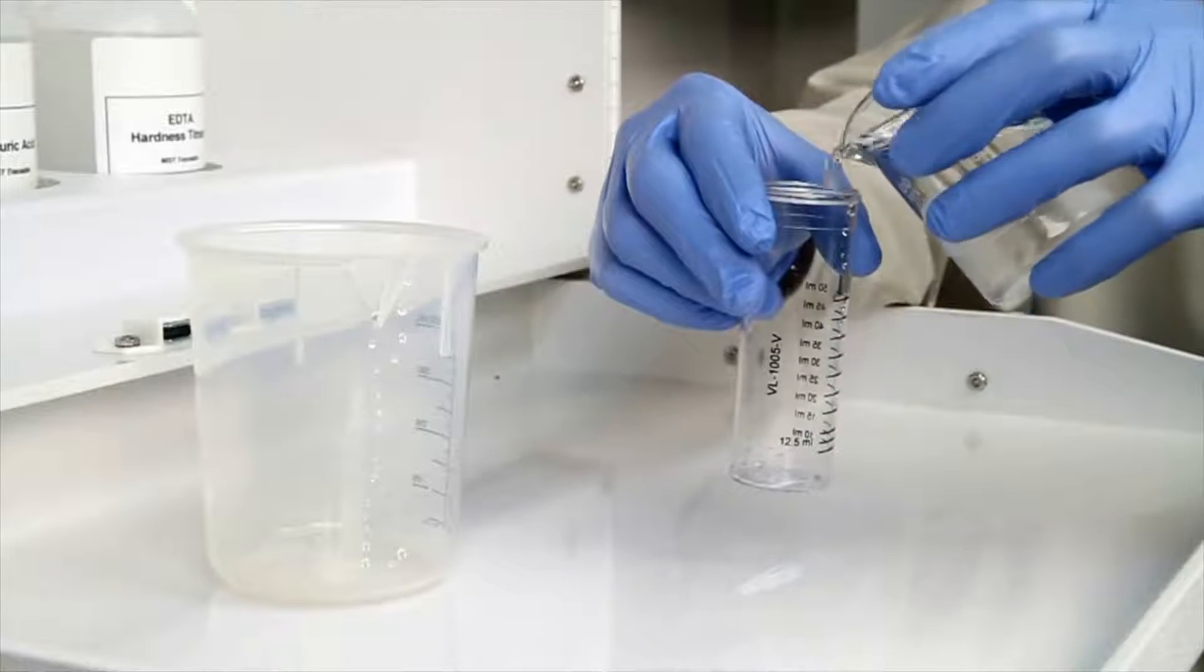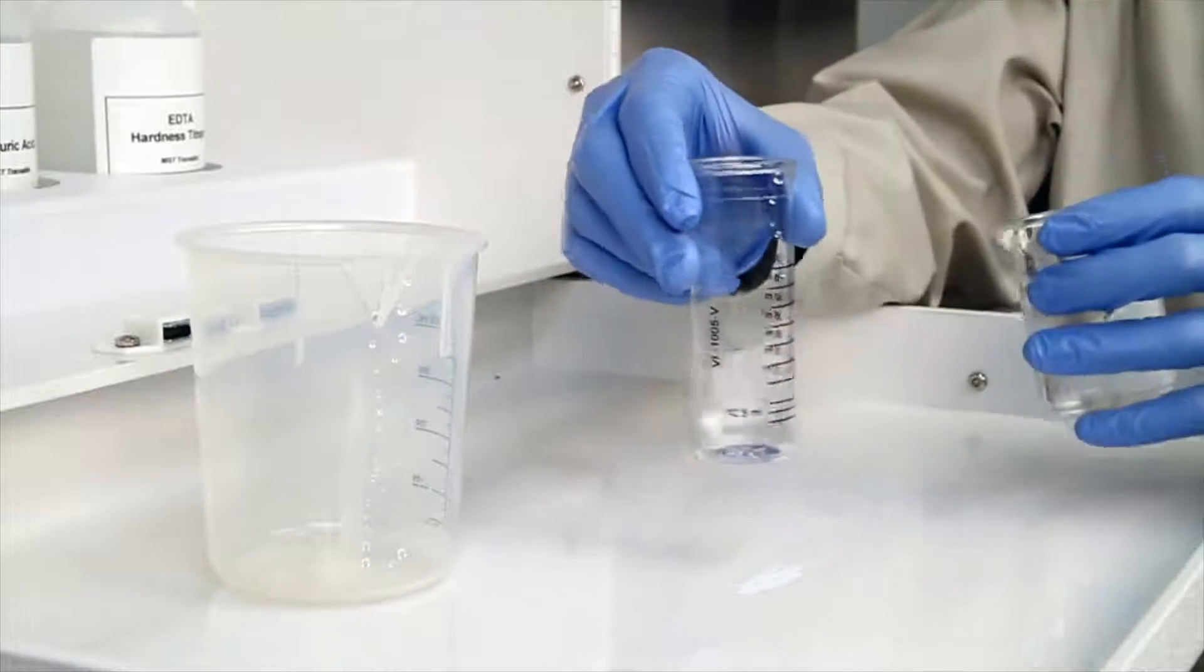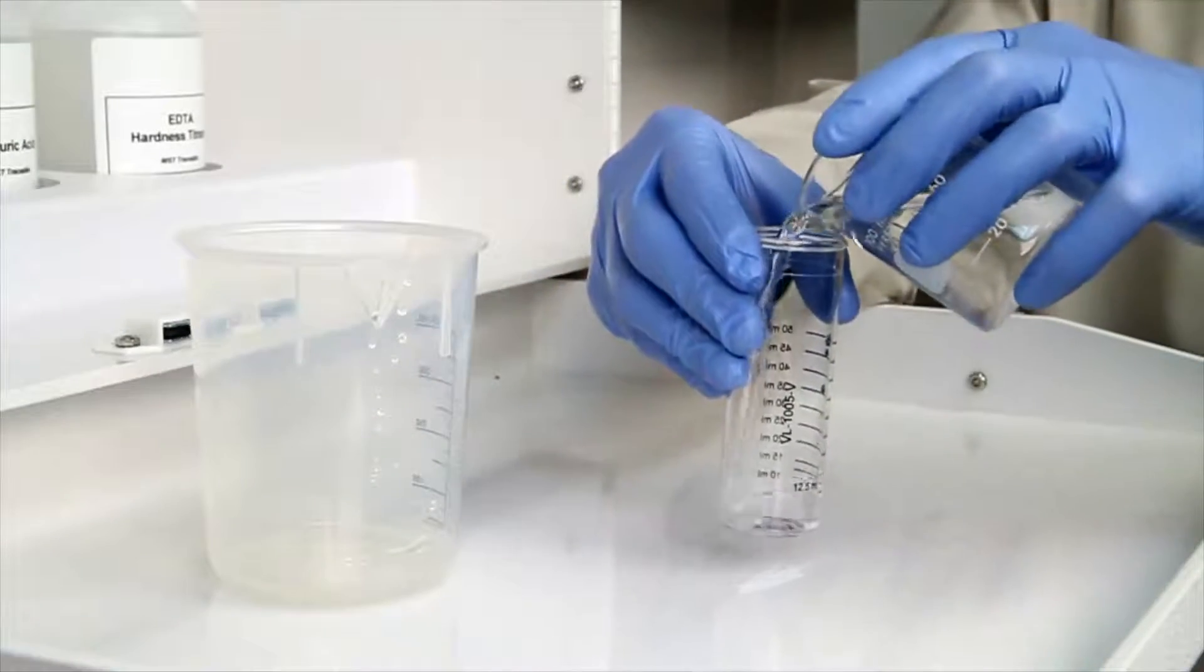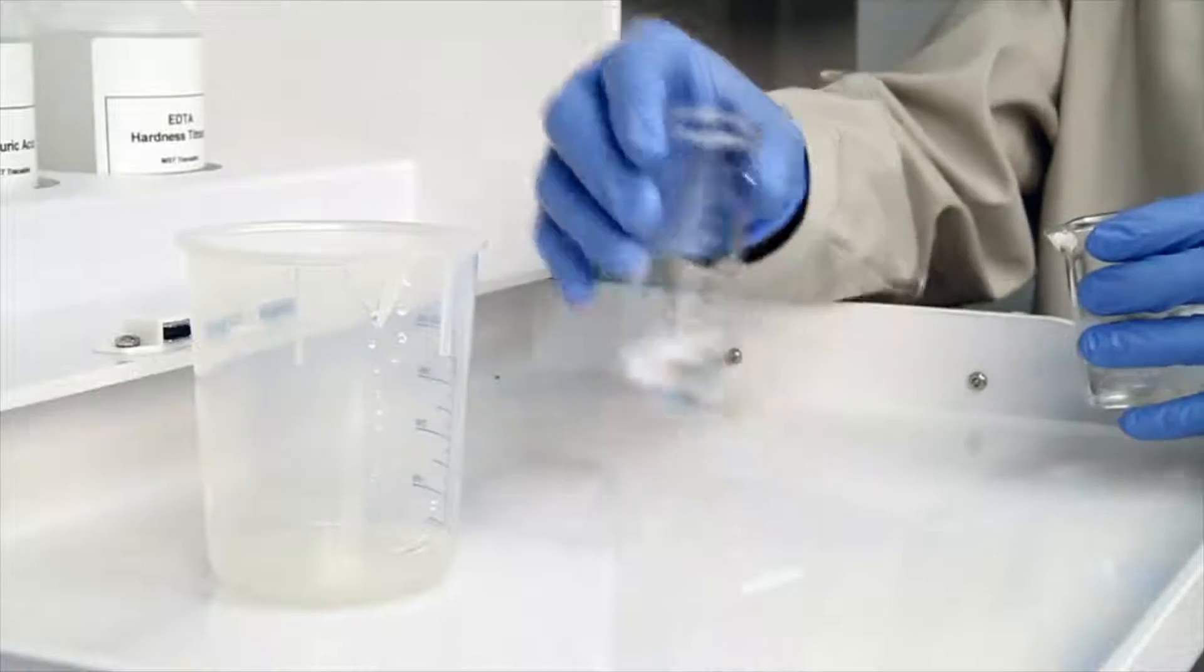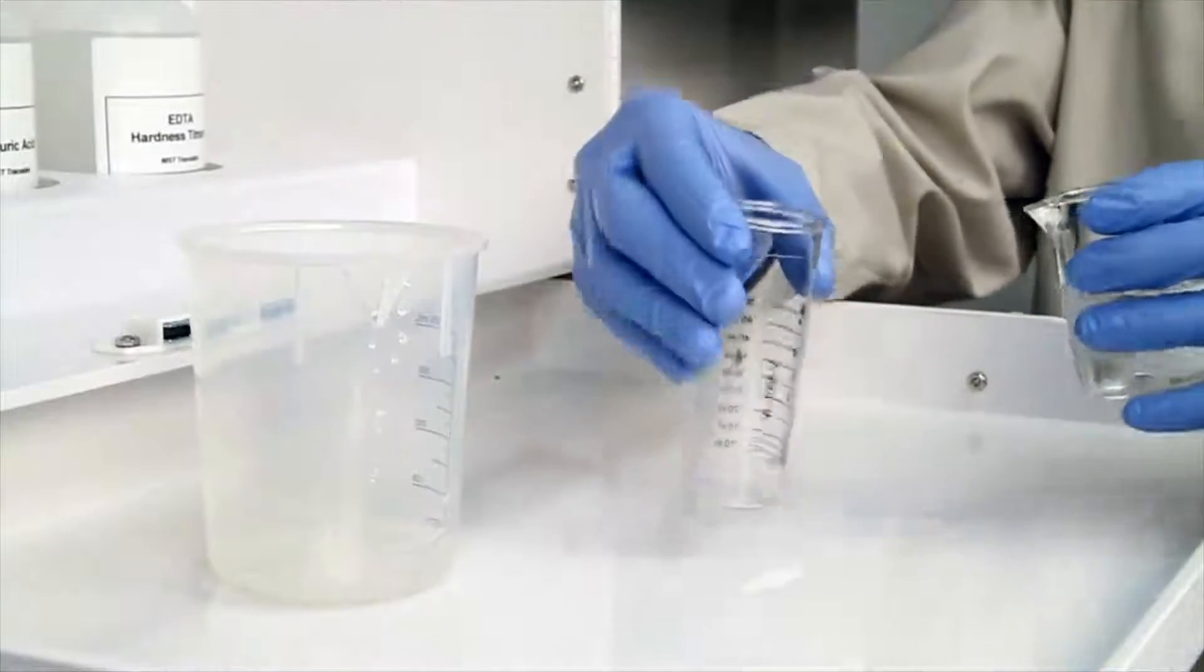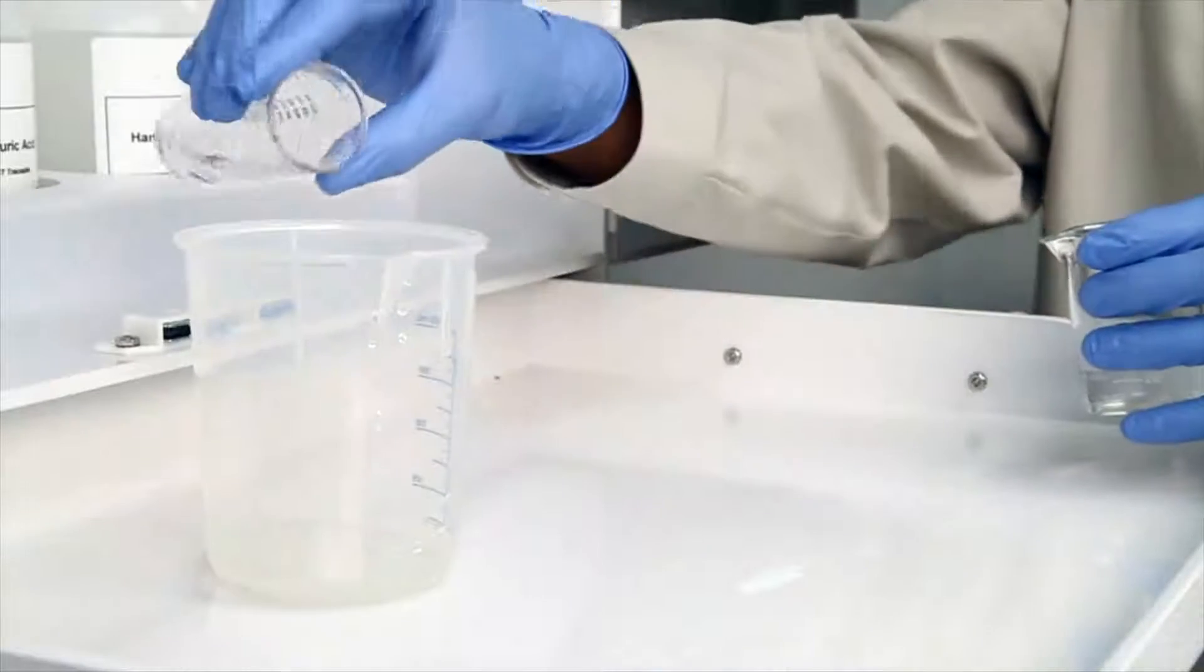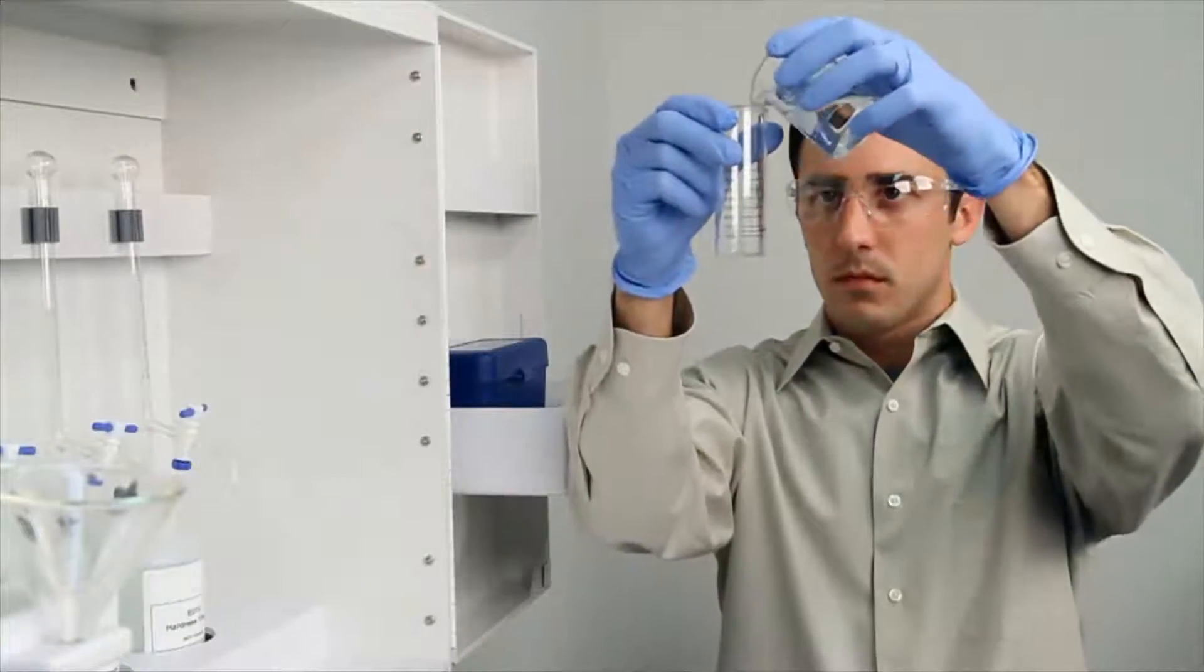The first step according to the Endpoint ID procedure is to gather an accurate sample. The smallest change in sample size will lead to inaccurate results. Before gathering your sample, it's important to rinse the vial three times with the sample to be tested. This minimizes the chance of contamination from a previous titration.